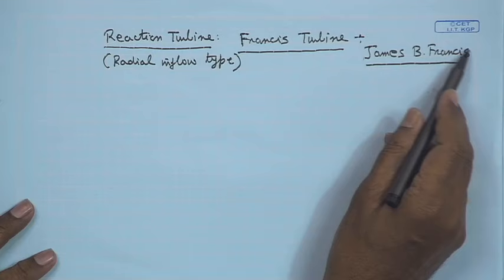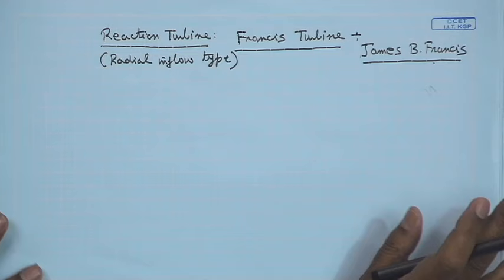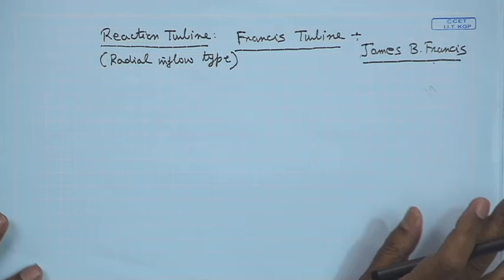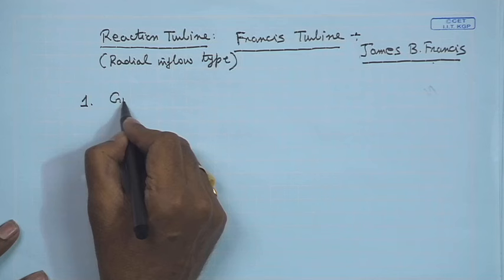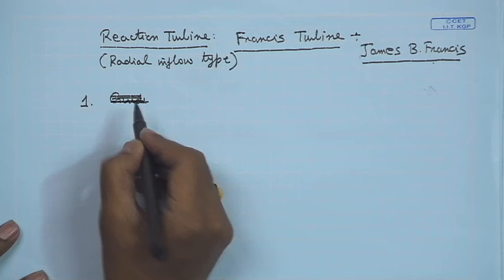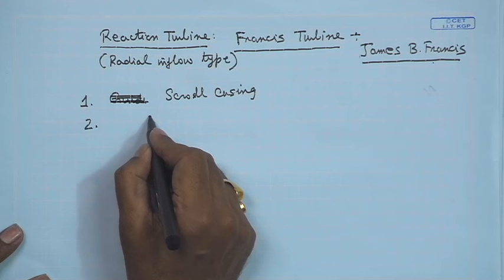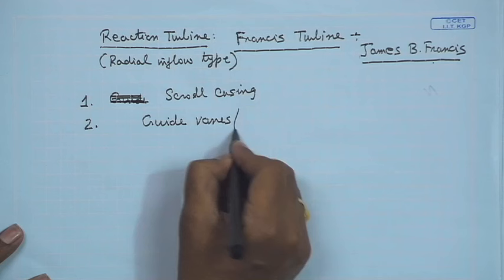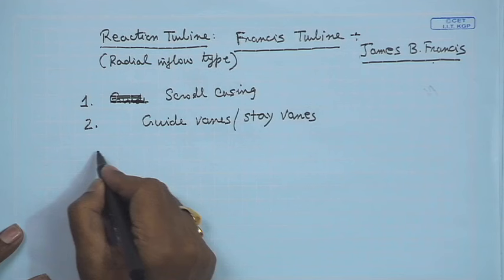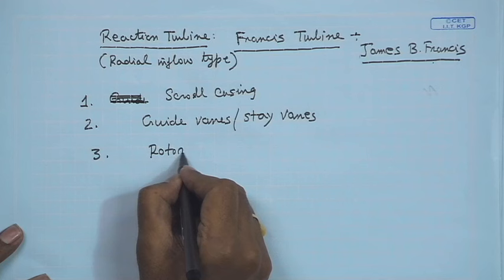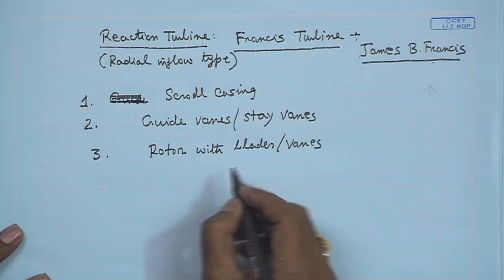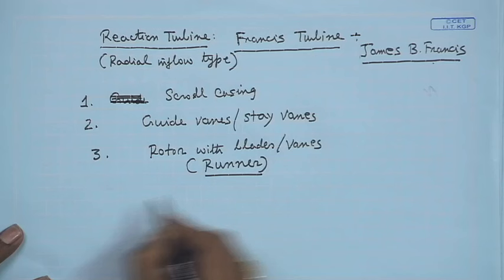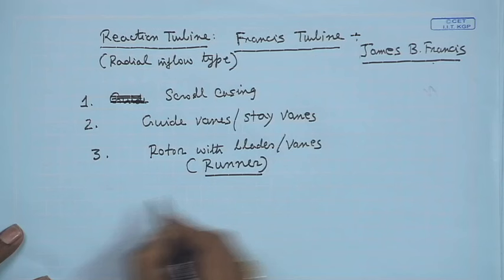The Francis turbine is a radial inflow type reaction turbine named after the American engineer Francis, who contributed much to its development. Its four main components, listed in order of the flow path, are: first, the scroll casing (a spiral casing); second, the guide vanes or stay vanes; third, the rotor with blades or vanes, known as the runner; and fourth, the draft tube.